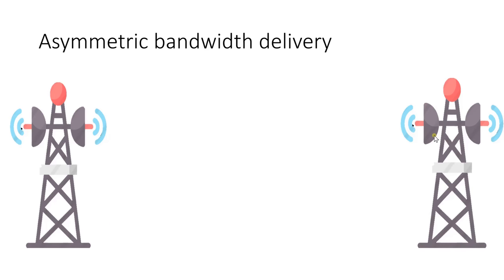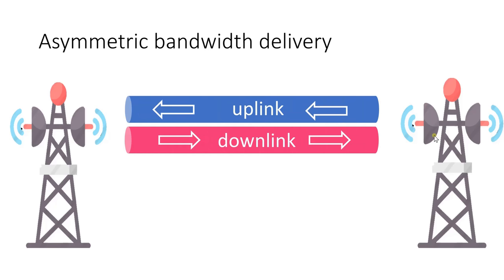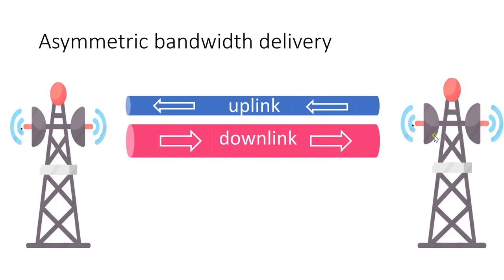The next technique is asymmetric bandwidth delivery. In legacy microwave networks, upstream and downstream had equal bandwidth — if uplink used 28 MHz, downlink also used 28 MHz — even though downlink carries significantly more data than uplink. Today, downlink requires more bandwidth compared to uplink.